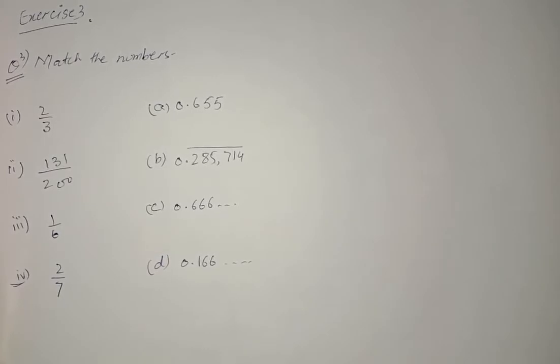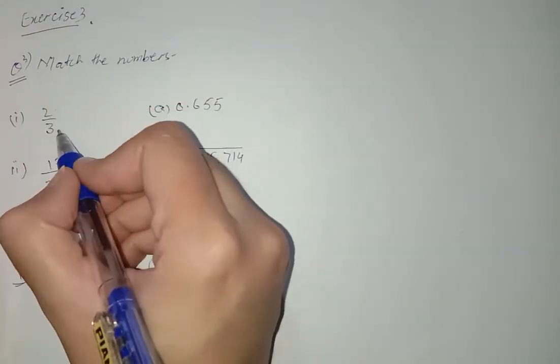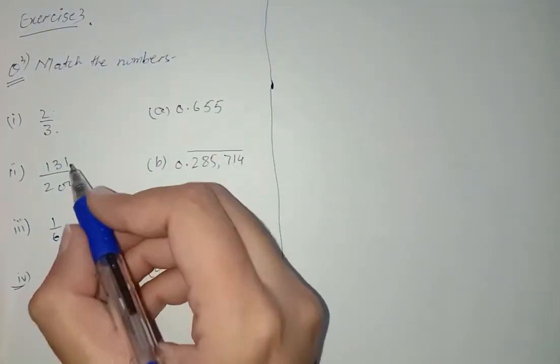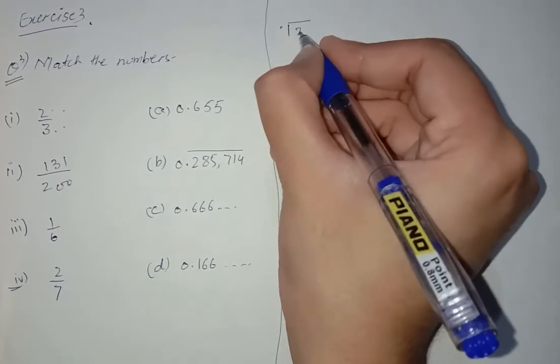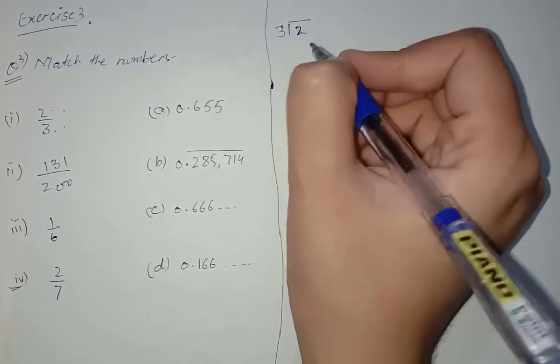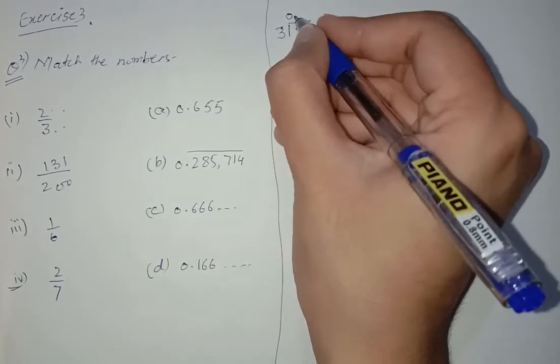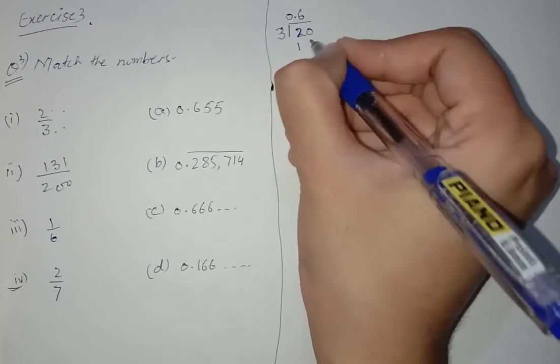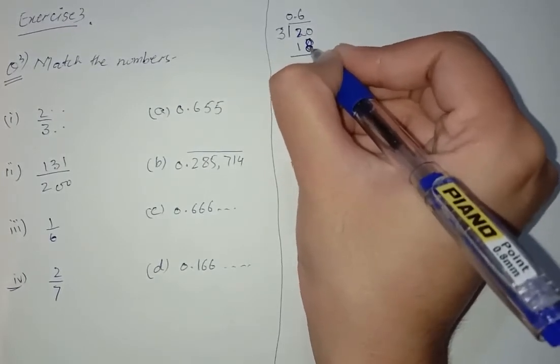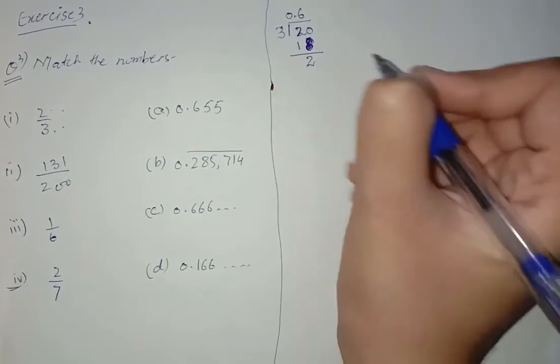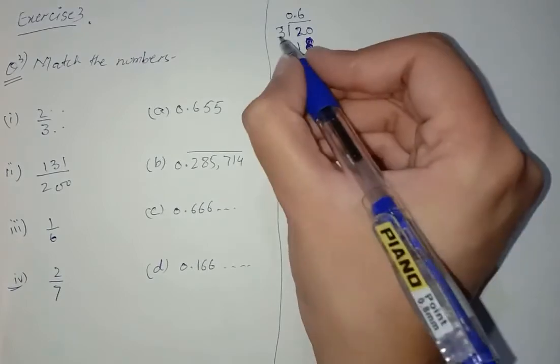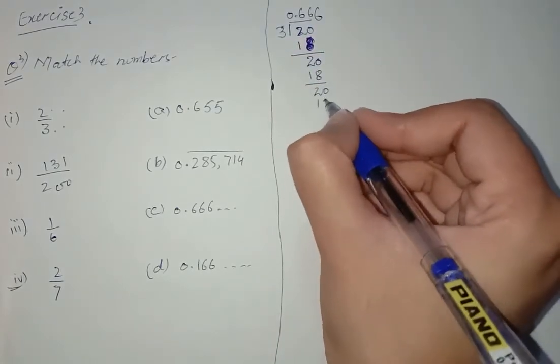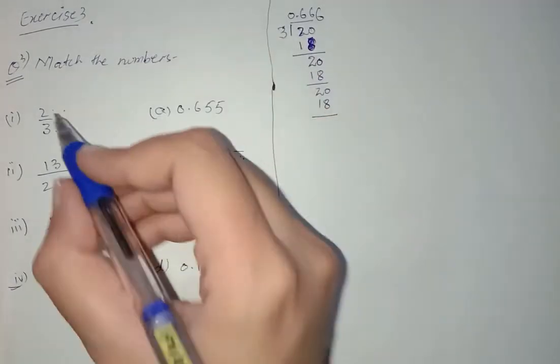Now we have to check which column matches with which. We have to divide 2 with 3. First of all, 2 doesn't come in the table of 3, so we can place a 0 point. 3 times 6 is 18, remainder is 2. We can place a point and one more 0. 3 times 6 is 18 again, and so on infinite. So 2/3 is matched with 0.666. So these both numbers are matched.